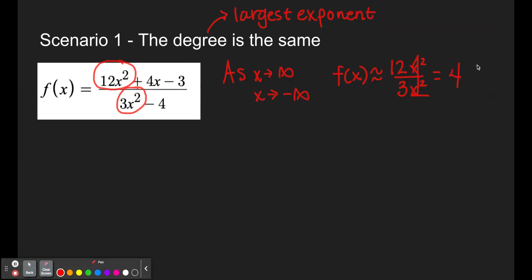And as you can see here, since there's no variable, it's going to be 4 whether x is positive infinity or negative infinity. So as x approaches positive infinity and negative infinity, f of x approaches 4.